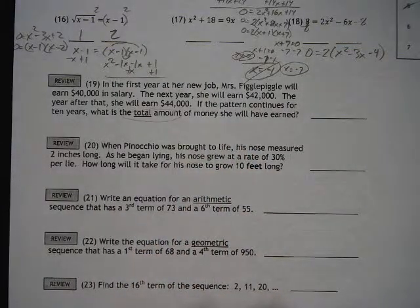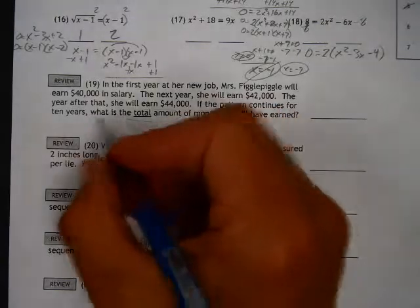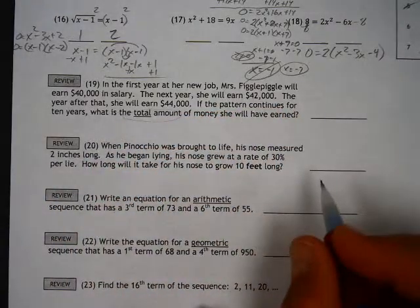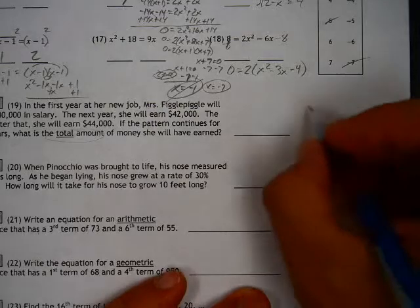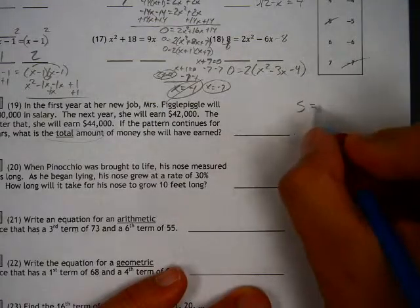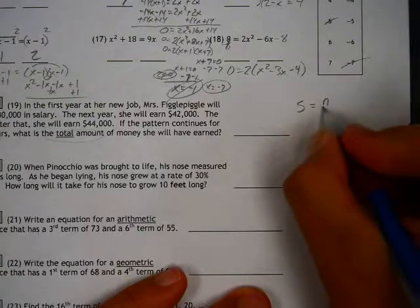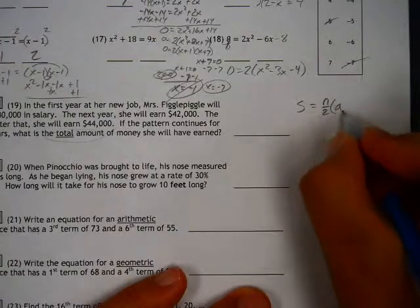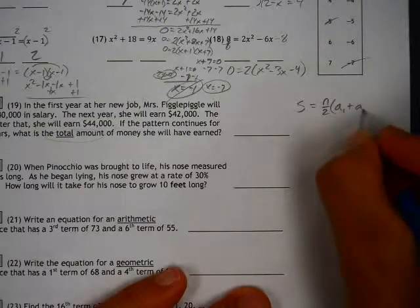The finite arithmetic series, there's an equation for that. We'll write it over here so that we have it. Sum of a finite arithmetic series is equal to n over 2 times a sub 1 plus a sub n.